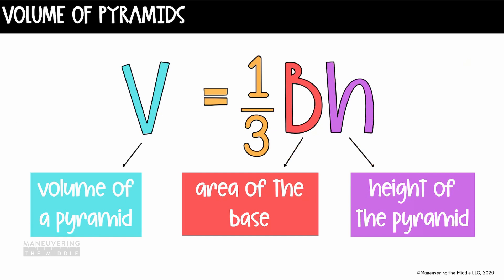In order to find the volume of a pyramid, we're going to use the formula V equals one-third big B times H. Or we can say that the volume of a pyramid equals one-third the area of the base times the height of the pyramid.